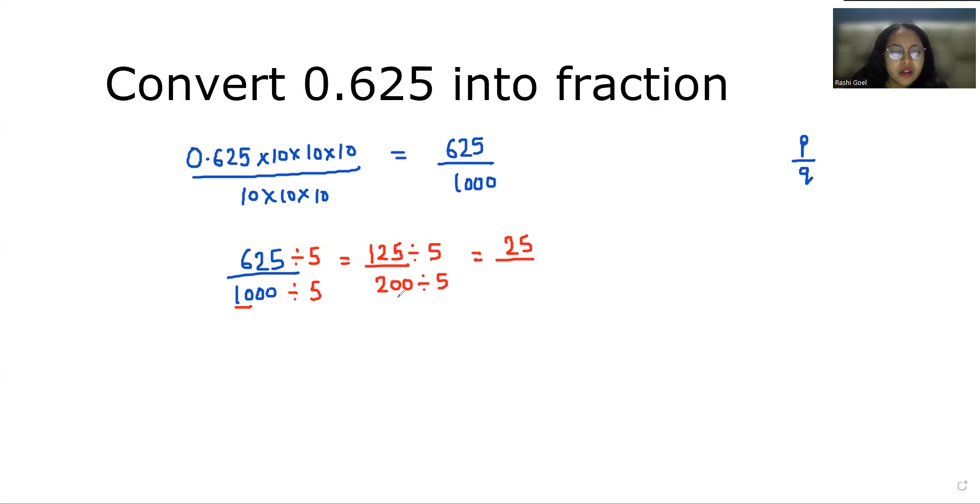200 divided by 5 is 40. Again the numerator ends with 5, so we'll divide by 5 again. 25 divided by 5 is 5, and 40 divided by 5 is 8.